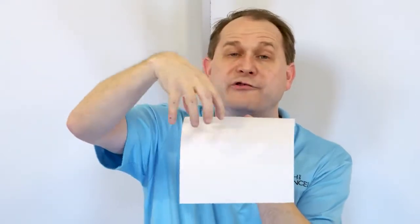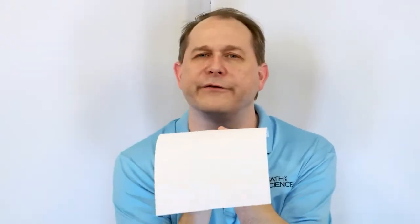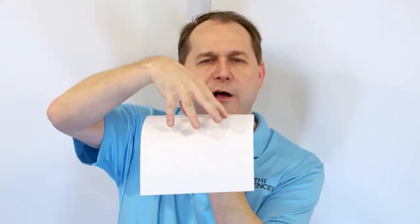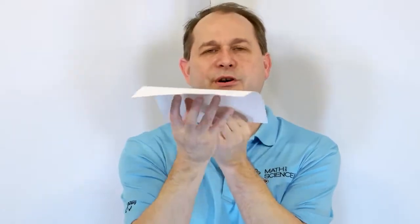When I blow across the top, I'm creating lower pressure. Remember the Bernoulli principle: when the velocity of the fluid flow goes faster, the pressure goes down. So there's lower pressure on top, but the underside of this thing has no moving air at all. So the normal atmospheric pressure is on the bottom. Low pressure on top, high pressure on the bottom means it gets pushed up.